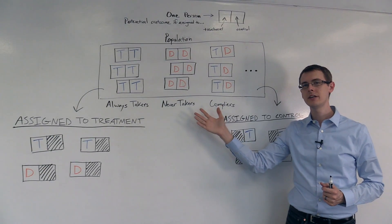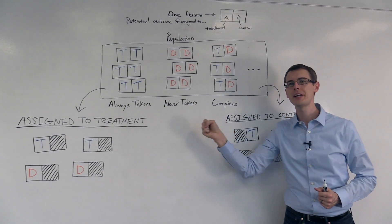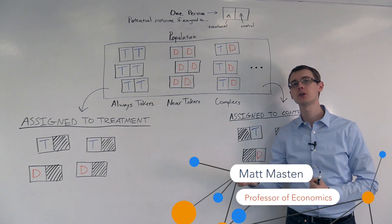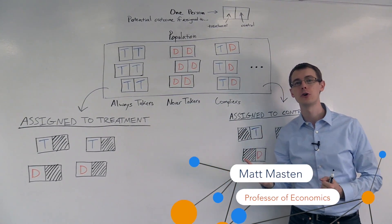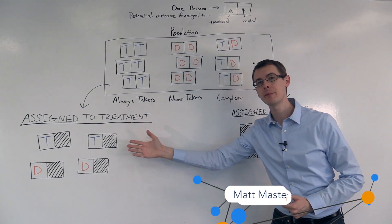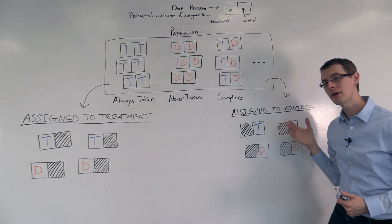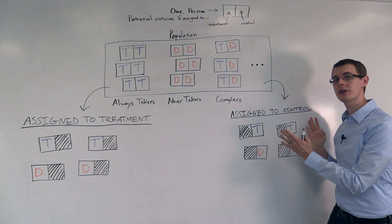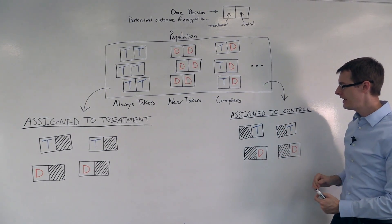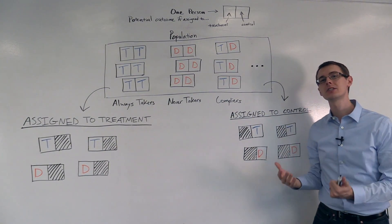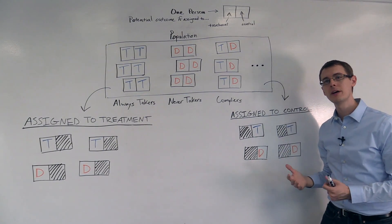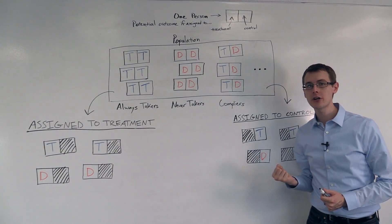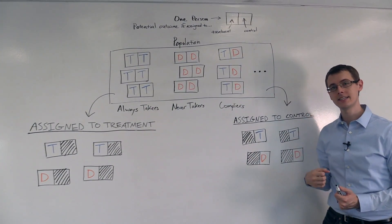Next, we take our population and draw a random sample of people from it, and then randomly split those people into two groups. Some people get assigned to the treatment group, and some people get assigned to the control group. Let's just look at the control group. Each person here, once they're assigned to the control group, has to decide: did they take the treatment, or did they not take the treatment?